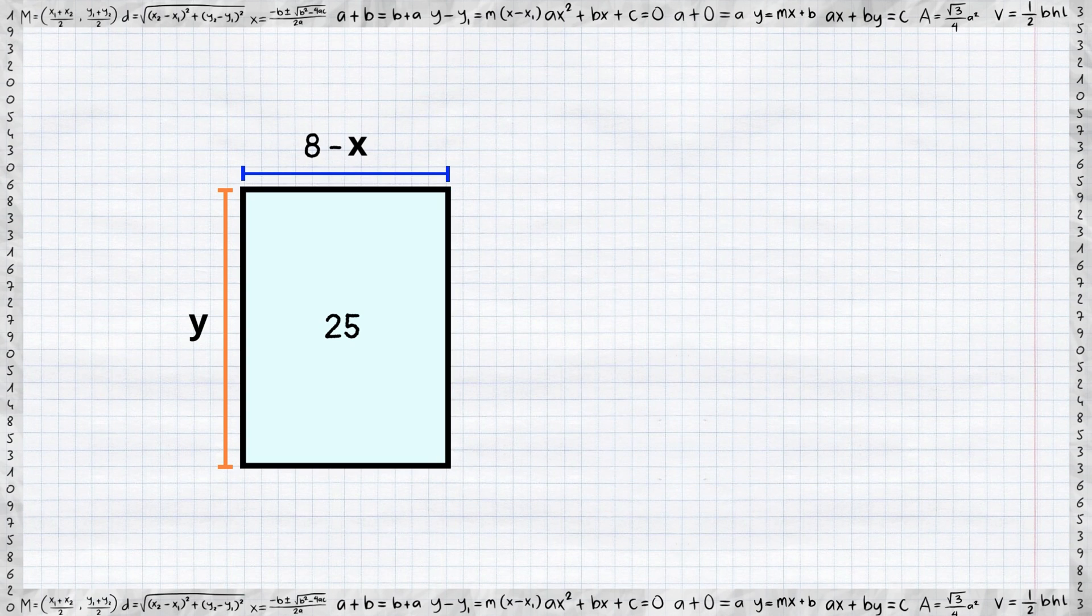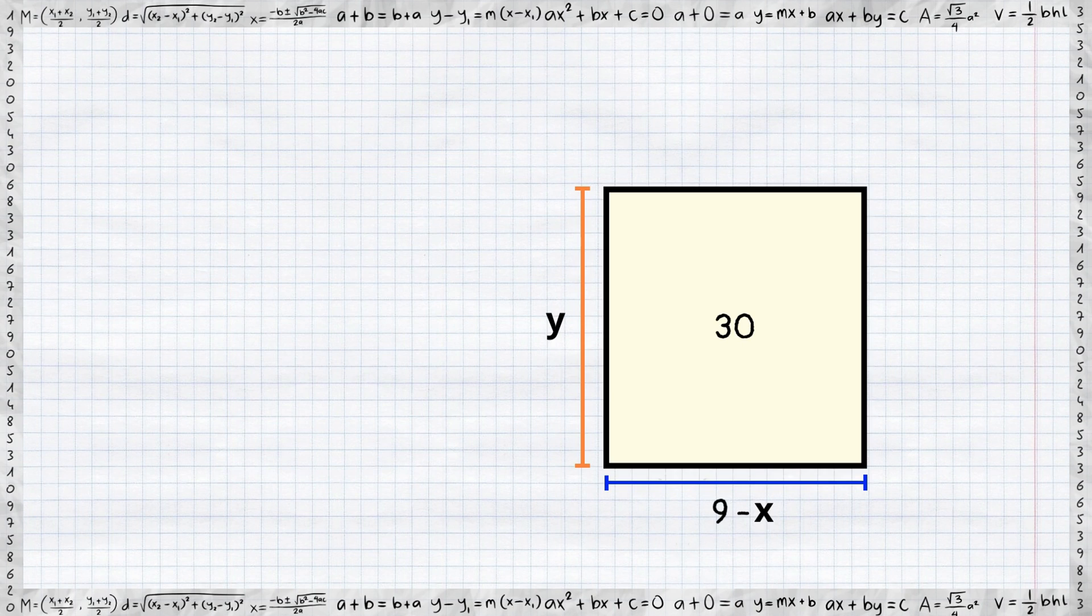Now, for the first rectangle, the area in terms of x and y is given by 8 minus x multiplied by y and this equals to 25. We can do a similar calculation for the third rectangle with the area of 30. It can be expressed as 9 minus x multiplied by y.